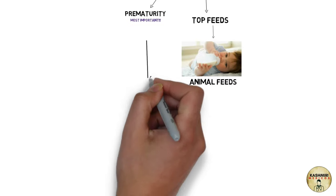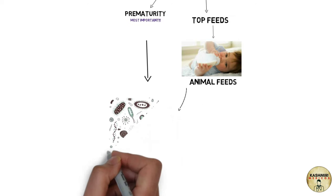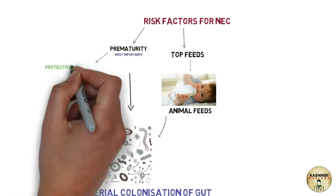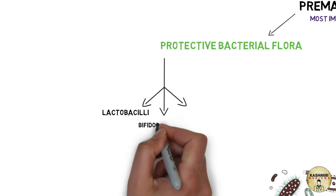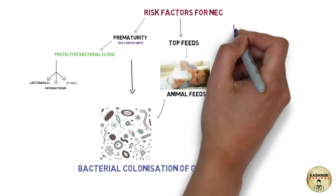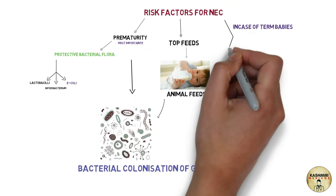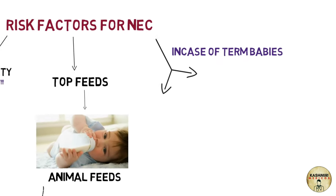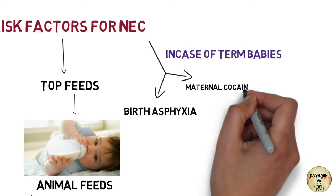Prematurity and top feeds in association favor the bacterial colonization of the gut. As a matter of fact, in a premature baby you don't have that protective bacterial flora in the intestines. Now the other risk factors are in term babies, in whom there are about 10% of NEC cases. The two main risk factors here are birth asphyxia and maternal cocaine abuse.